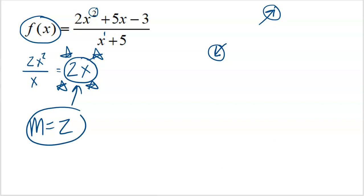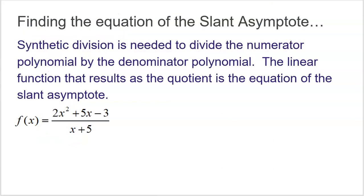Because the result of dividing those leading terms was a linear polynomial with slope 2, our slant asymptote will be parallel to that line with a slope of 2. That's half the battle — a slanted line needs more than just a slope, so how do we find the actual equation of that slant asymptote? We'll need synthetic division.